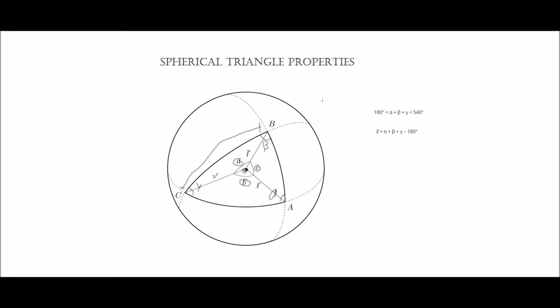Another interesting concept is the spherical excess, represented here by the letter E. The spherical excess is, as you probably guessed, the amount by which the sum of the interior angles deviates from 180 degrees. This makes sense because 180 degrees is the norm for Euclidean triangles, and therefore it makes sense to call such a deviation the spherical excess — by how much the sum of the interior angles of the spherical triangle exceeds 180 degrees.